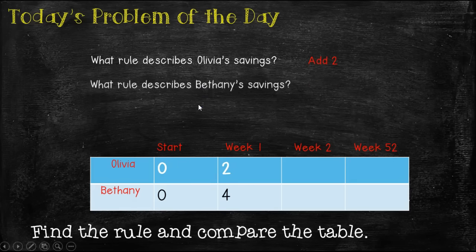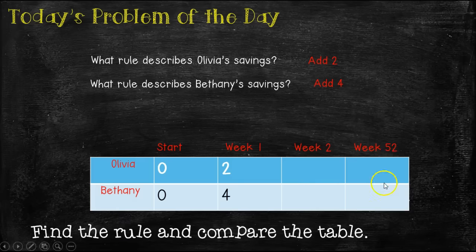So now what rule describes Bethany's savings? She started with $0 and in week one she saved $4. So her rule would be add four from here to here, from the start to the week one, then to week two, and ultimately we need to figure out week 52.